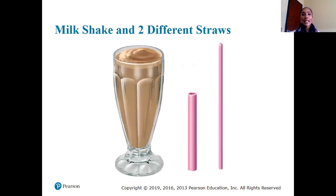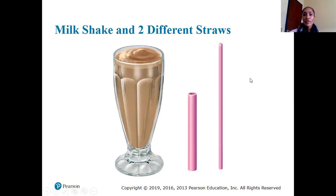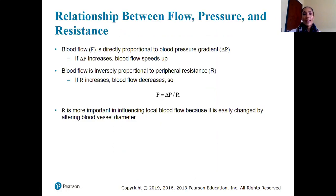Consider a milkshake with two different straws: which has less resistance? Obviously the one with a larger diameter. A shorter, wider straw allows the milkshake to flow easily from the container to your mouth. A longer, thinner straw has more resistance, making it much harder to draw the milkshake out.